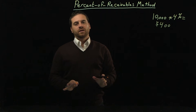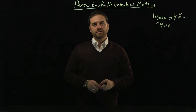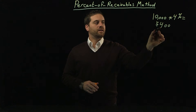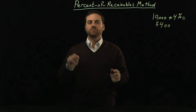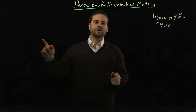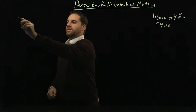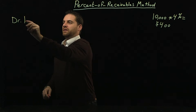Now, here's where a lot of students get confused and make a mistake. That amount is not the amount that we should use in the journal entry when we record bad debt expense at the end of the year.